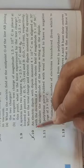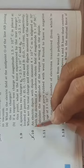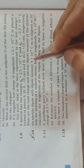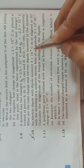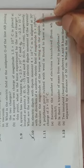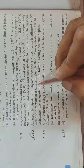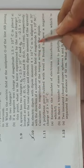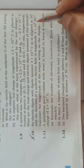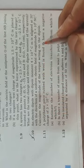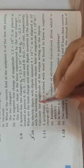Now we take next question 1.10: an electric dipole with dipole moment 4 into 10 to the power minus 9 coulomb meter is aligned at 30 degrees with the direction of uniform electric field of magnitude 5 into 10 to the power 4 newton per coulomb. Calculate the magnitude of the torque acting on the dipole.